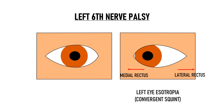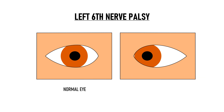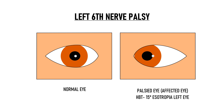So, in this patient, the right eye is the normal eye and the left eye is the affected eye. Suppose we ask this patient to fixate on the torchlight, and he fixates with his right eye, which is the normal eye. We see that the light reflex is falling on the temporal border of the left eye's pupil, and it is central in the right eye. So, the Hirschberg test in this case shows 15 degrees of esotropia in the left eye.